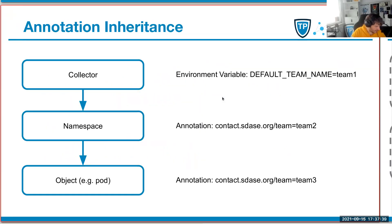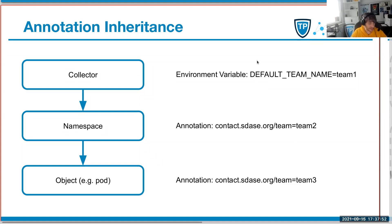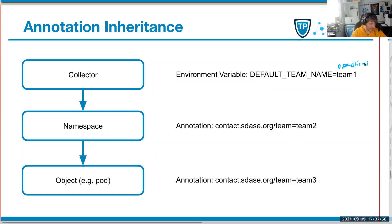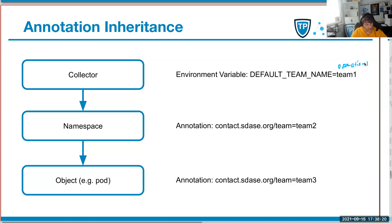You set some environment variables on the collector, like the default team name. In case you have an operations team and different project teams, it might make sense that the operations team is the default, and all the others have to define it on the namespace. But I came to the conclusion that putting the responsibility of teams that forgot to add annotations onto the operations team is not so useful.